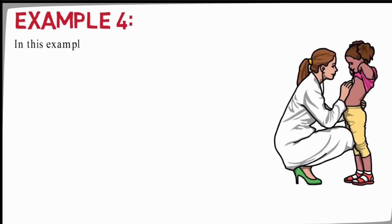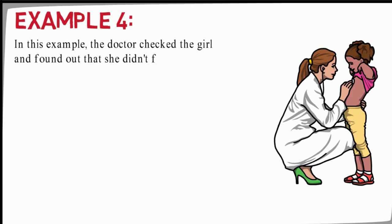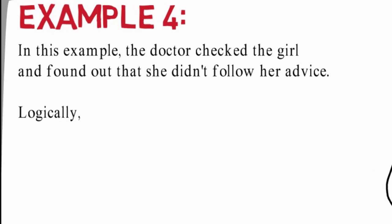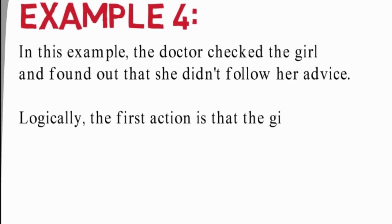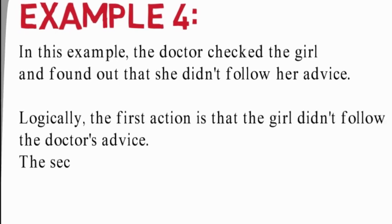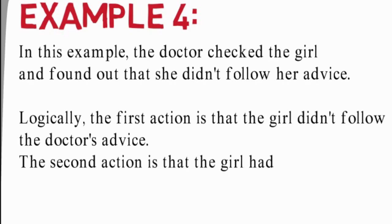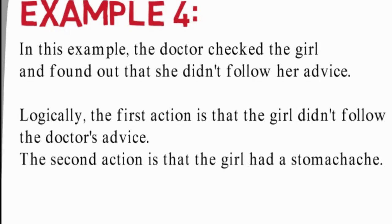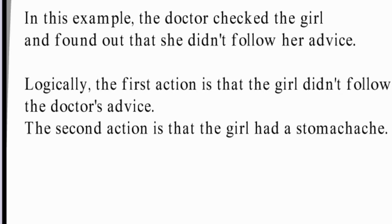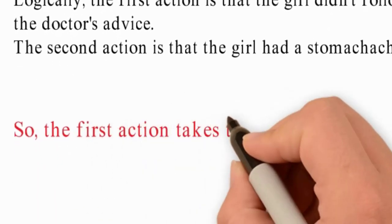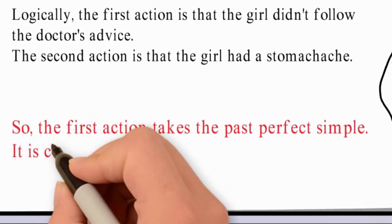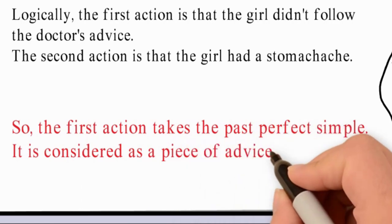In Example 4, the doctor checked the girl and found out that she didn't follow her advice. Logically, the first action is that the girl didn't follow the doctor's advice. The second action is that the girl had a stomachache. So the first action takes the past perfect simple. It's considered as a piece of advice.